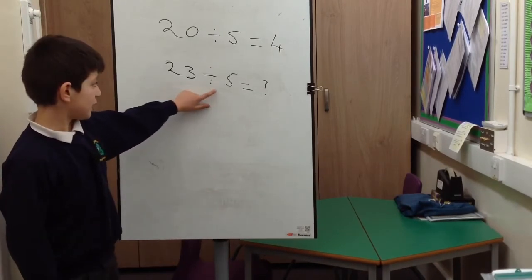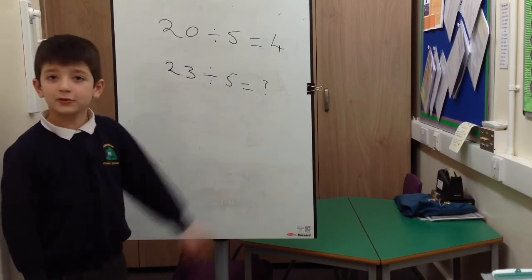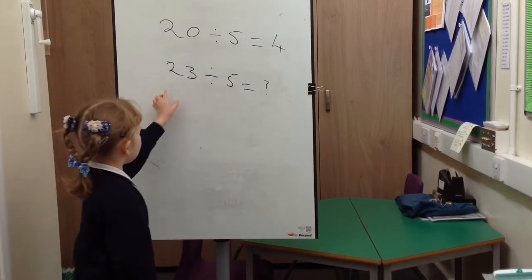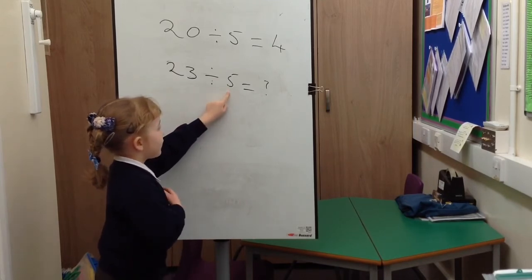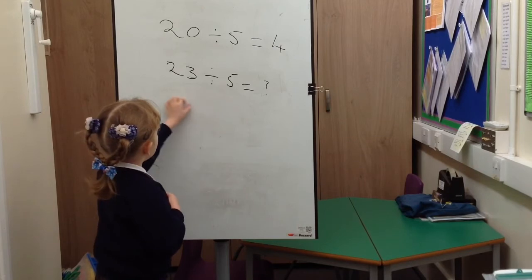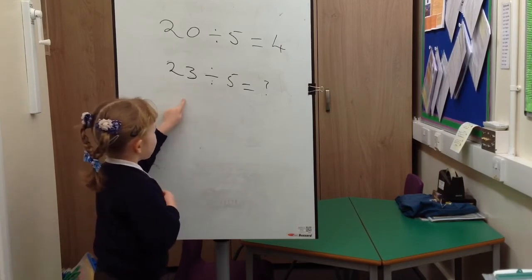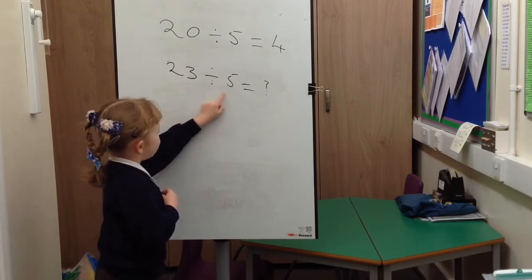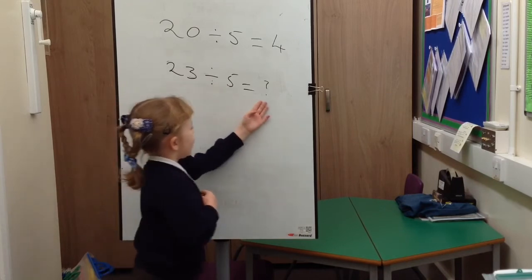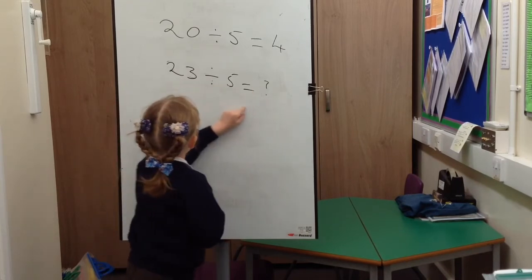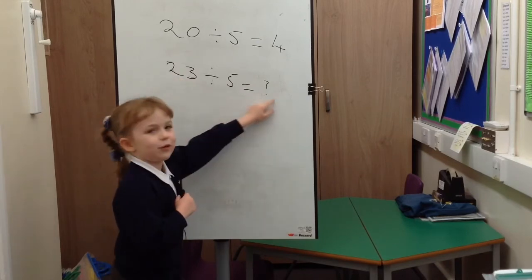So 23 is not in our 5 times tables column. So what do we do? We can't do this because it's not in the 5 times tables. So we need to do the smallest number that is in the 5 times tables, and we do that answer, and then this number that you didn't use is the remainder.